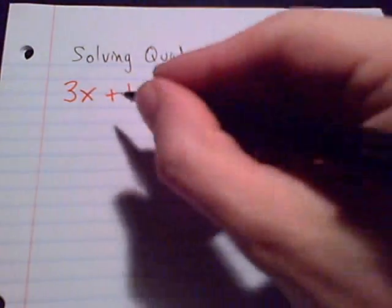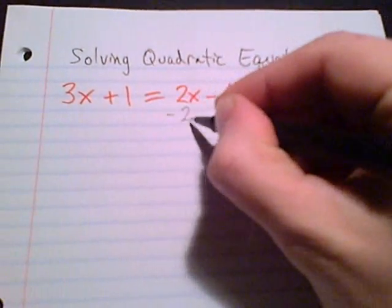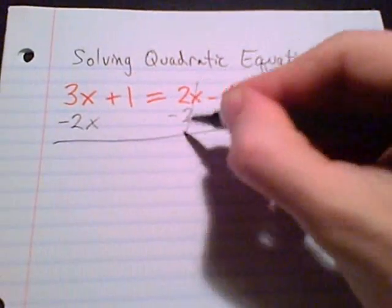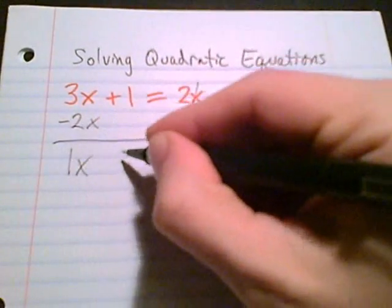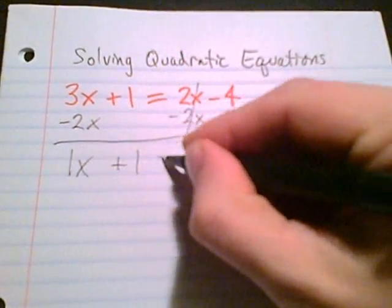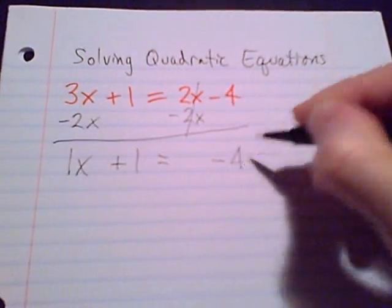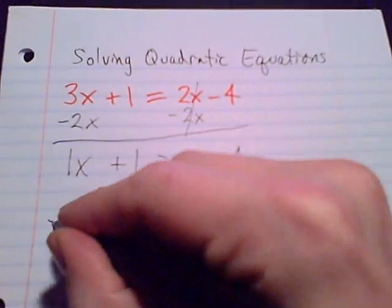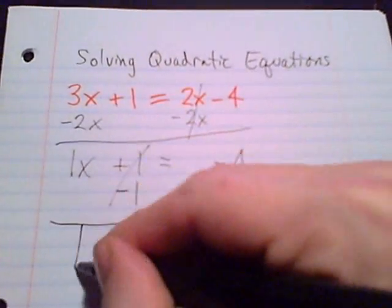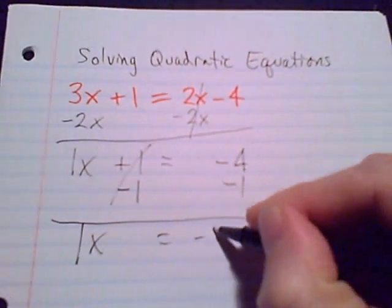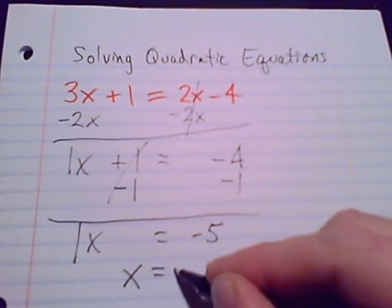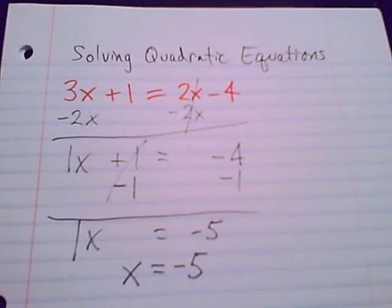End up with X equals... let's just go for it. Let's take away 2x on each side so I'm getting my variable on the left and I'll get the number on the right. So take away 1. 1x equals negative 5.